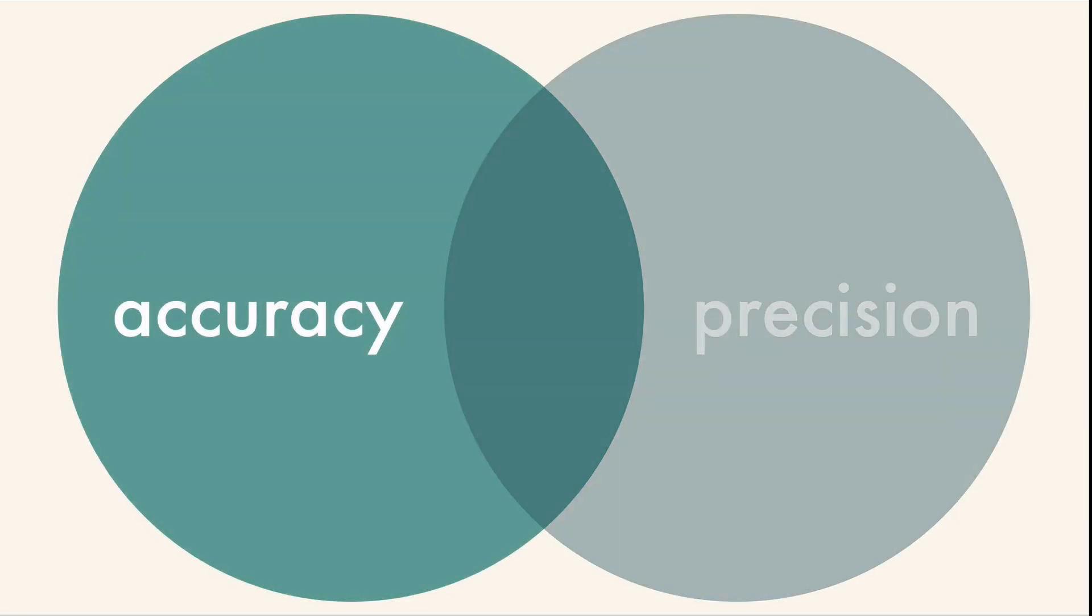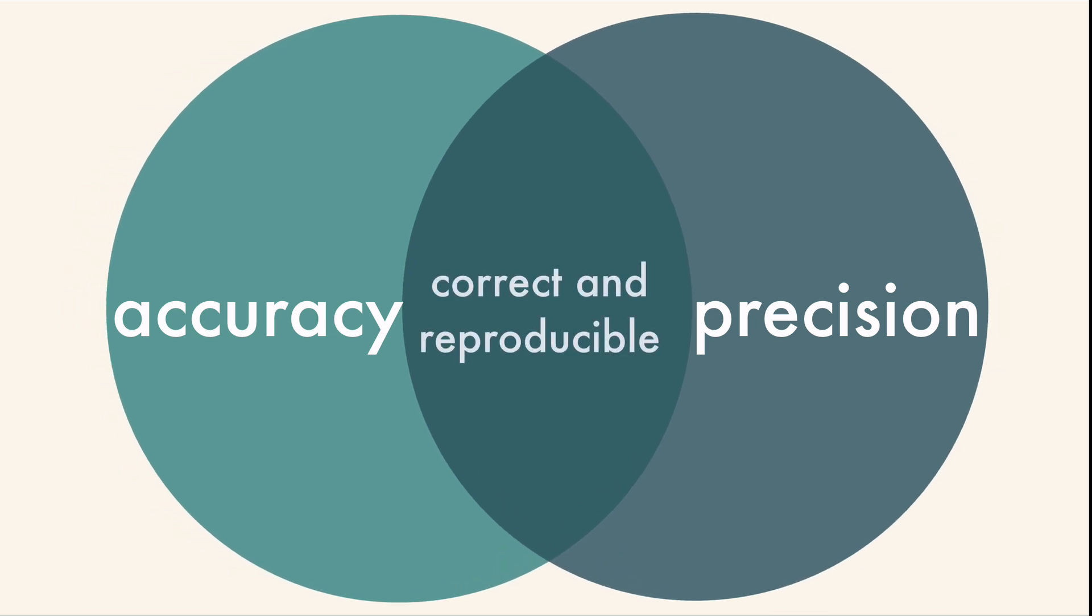In science we also make a distinction between accuracy and precision, even though you may use those words interchangeably in other disciplines. They have different meanings in science. Accuracy and precision allow our experiments to be correct and reproducible. Accuracy is how close to the true value our measurement is, and precision is how close the measurements are to each other.